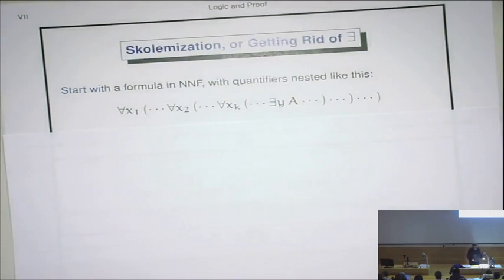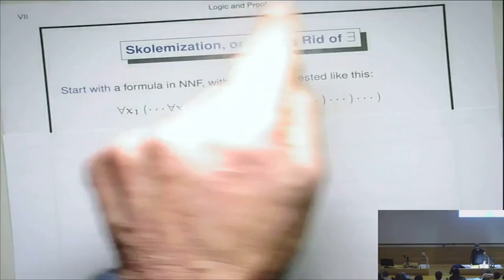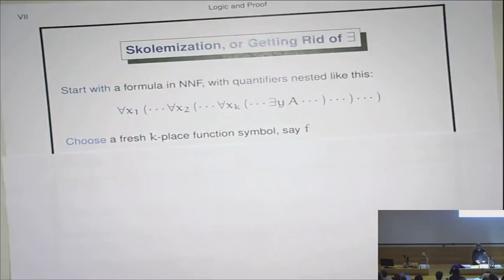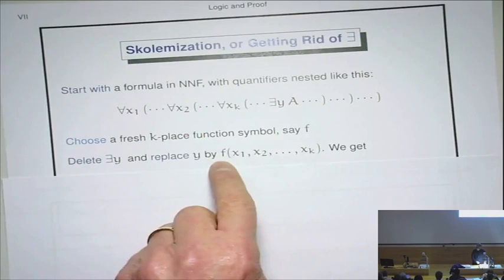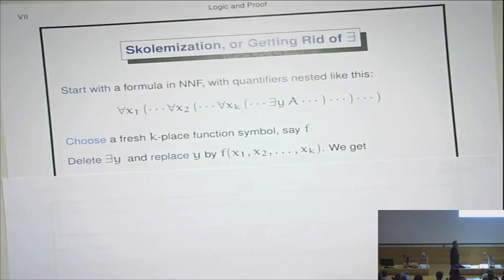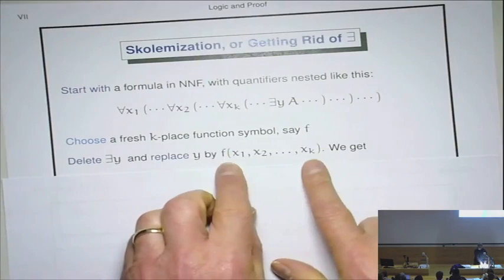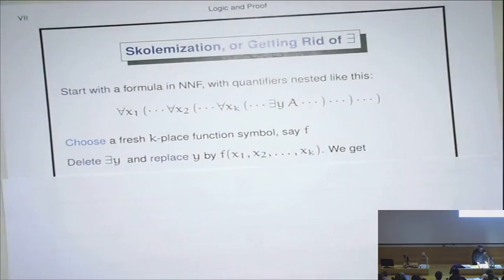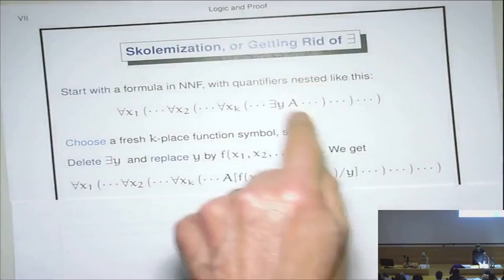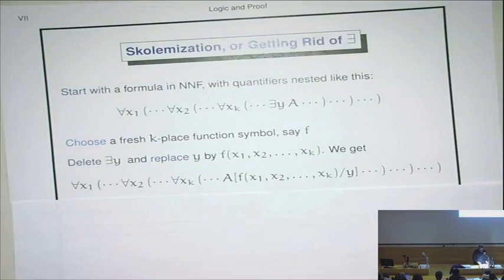Now, skolemization is, the idea is, if for all X1, for all X2, for all XK, there exists Y, that's kind of like saying there's a function. There's a K-argument function, and we're just going to replace Y by this new function. Of course, it has to be a new function. You can't call it a sign or something. Why the hell would this be true of the sign function? So, a brand new function symbol, give it that correct number of arguments, which is exactly the number of things that are in the scope at that point. And then you replace Y everywhere in the scope where you had Ys. Replace them by this function application.